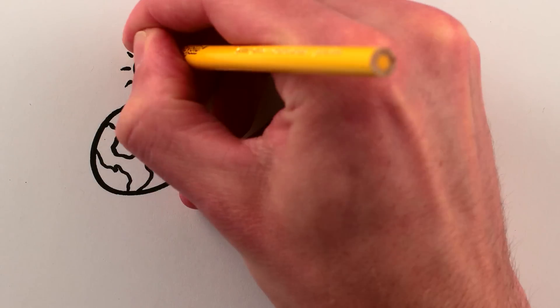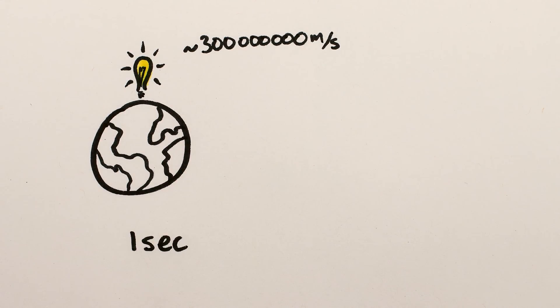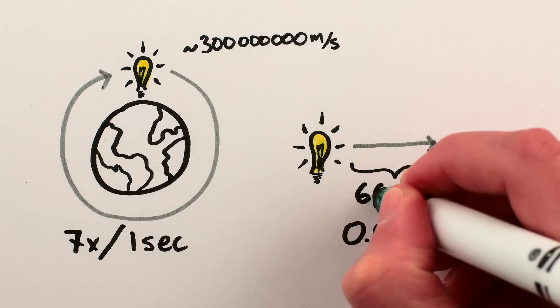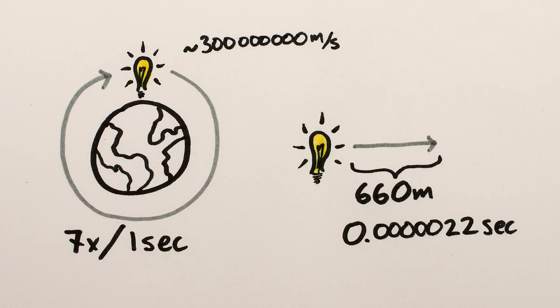To put that time into perspective, light travels fast enough that in one second it could go around the Earth seven times, but in 2.2 microseconds light will only travel 660 meters, or less than half a mile.